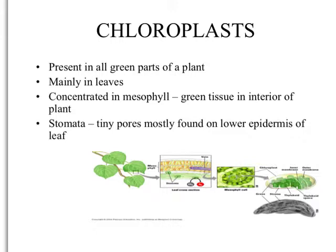The solar powerhouse of plant cells — the chloroplasts — are present in all green parts of a plant. If a part is green, it can do photosynthesis. The majority of chloroplasts are found in leaves, concentrated in what's called the mesophyll, which is the green tissue in the interior of the leaf. Stomata are the tiny pores on the underside of the leaf.